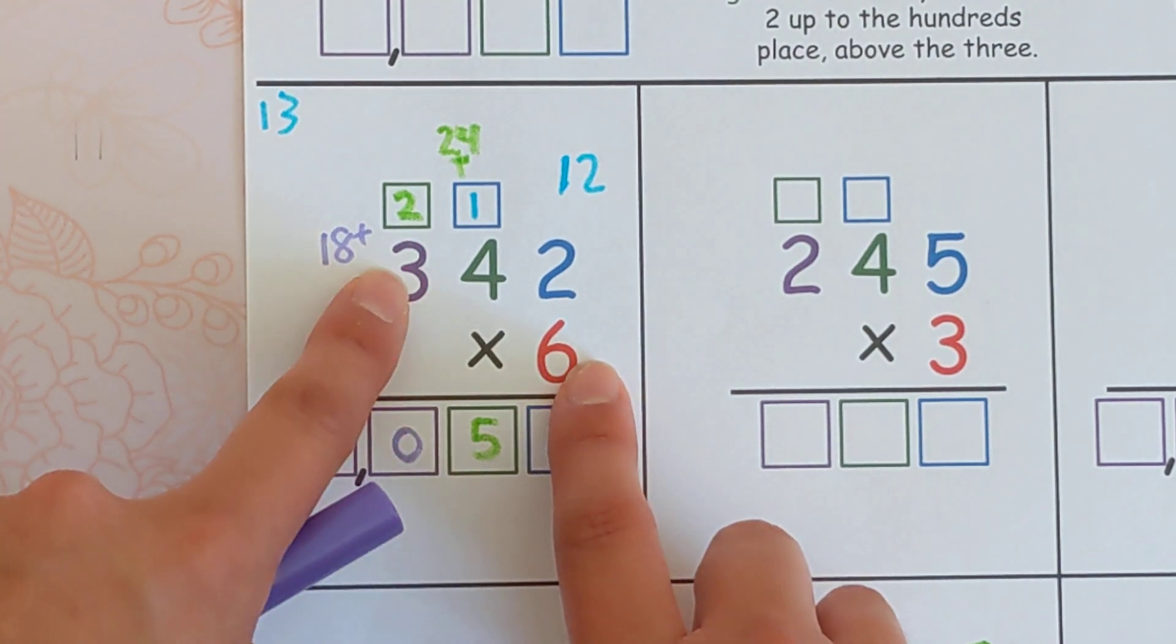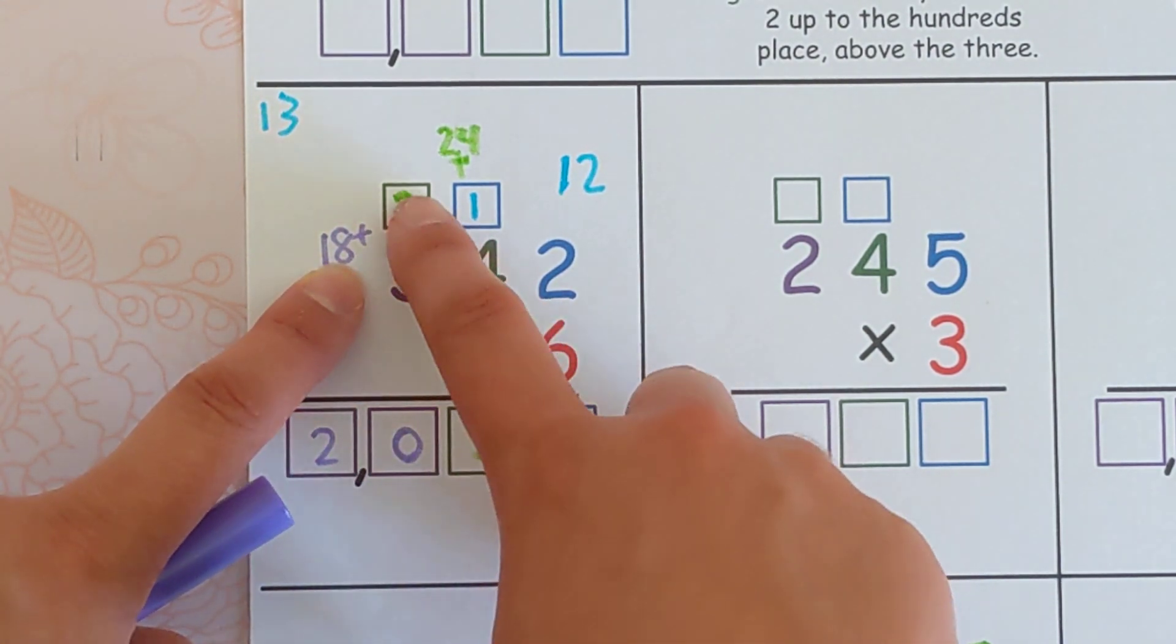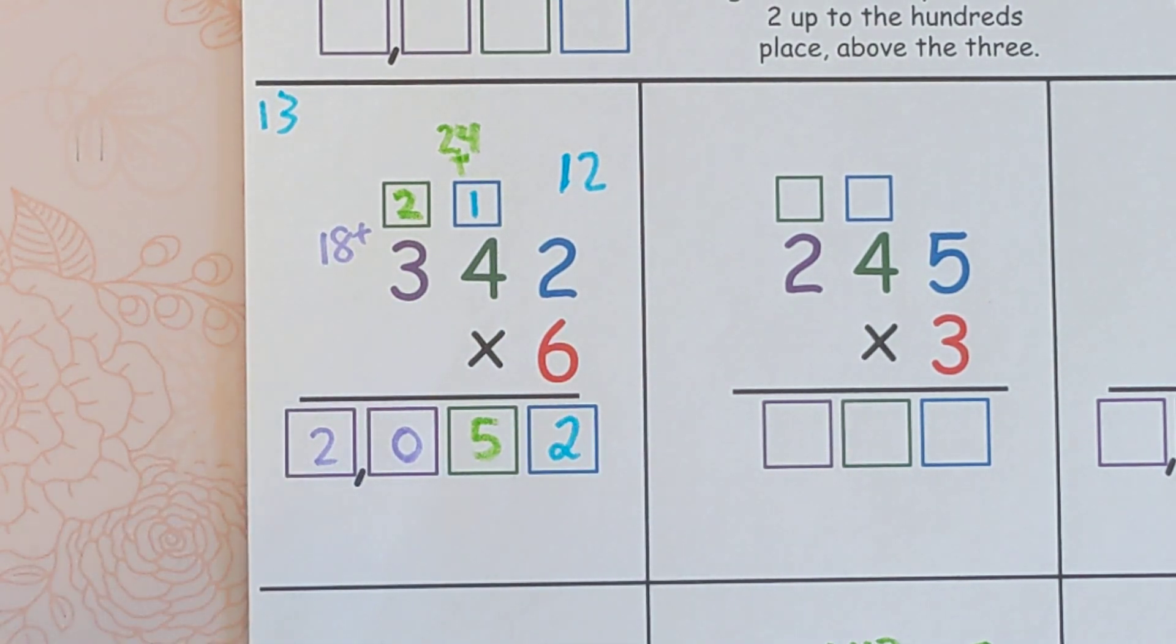Six times three is 18 plus two is 20, and we stuck that down there for our final product of 2052.